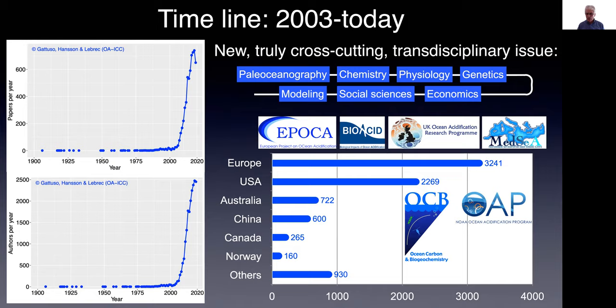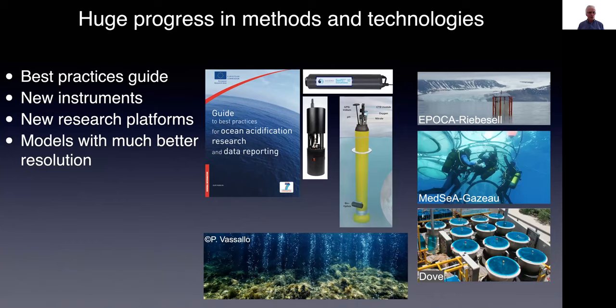The US has also been very, very active, including through support by the Ocean Carbon and Biogeochemistry program and also by the NOAA Ocean Acidification Program. In the meantime, there was also huge progress in methods and technologies. EPOCA and US colleagues established a guide to best practices on ocean acidification research and data reporting, which has proven extremely useful for newcomers in the field.